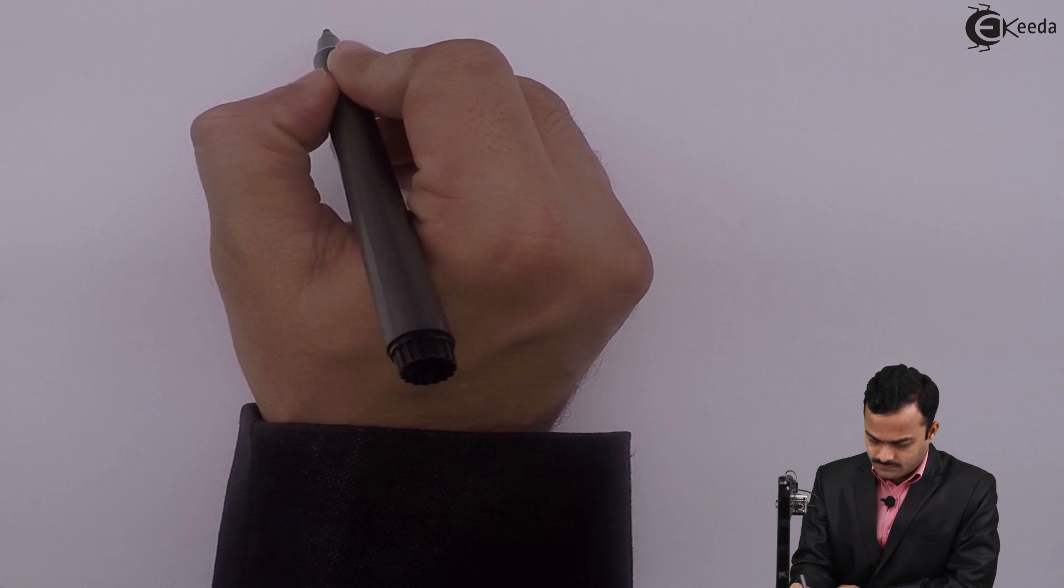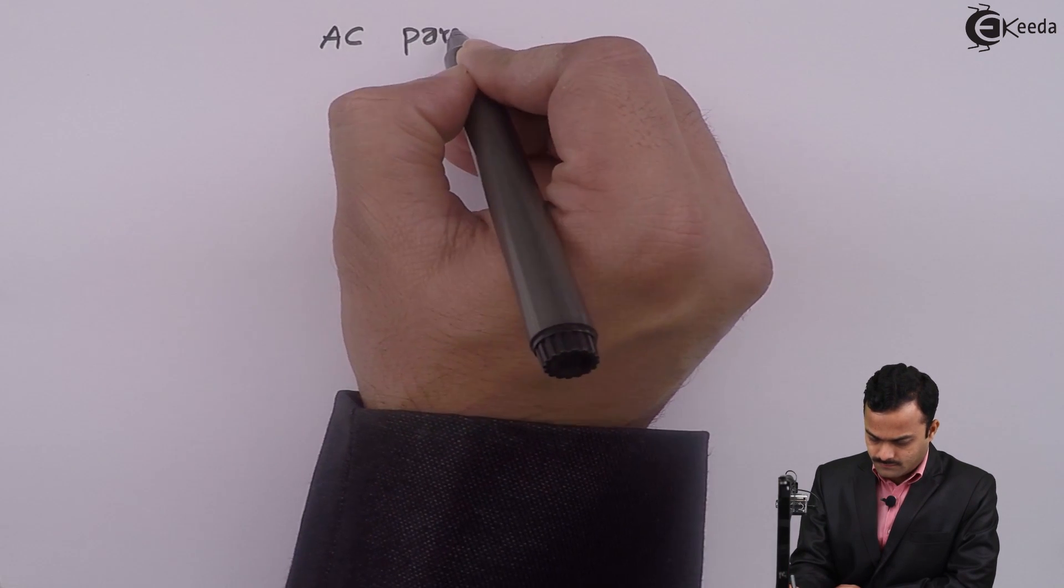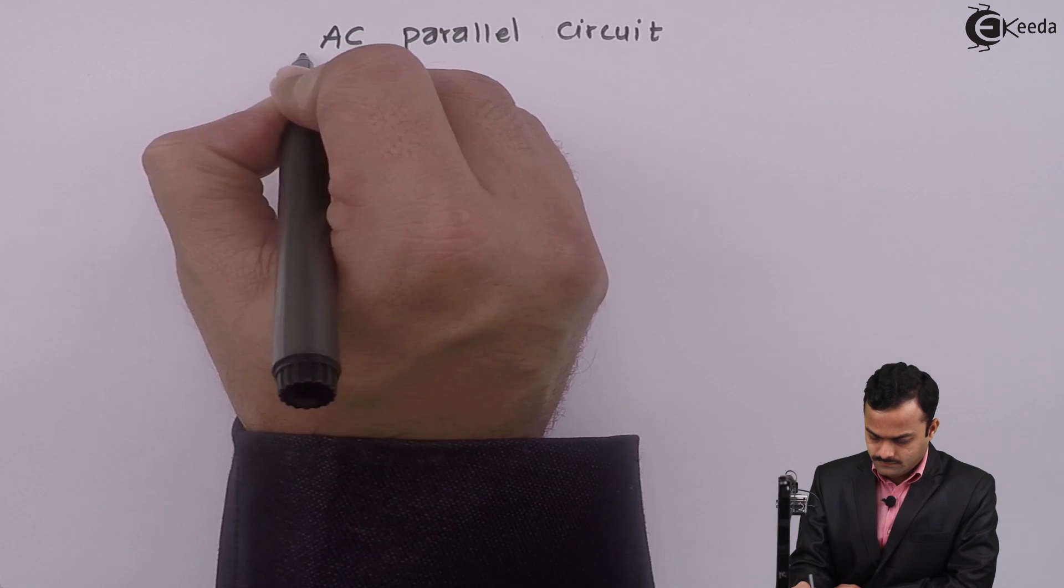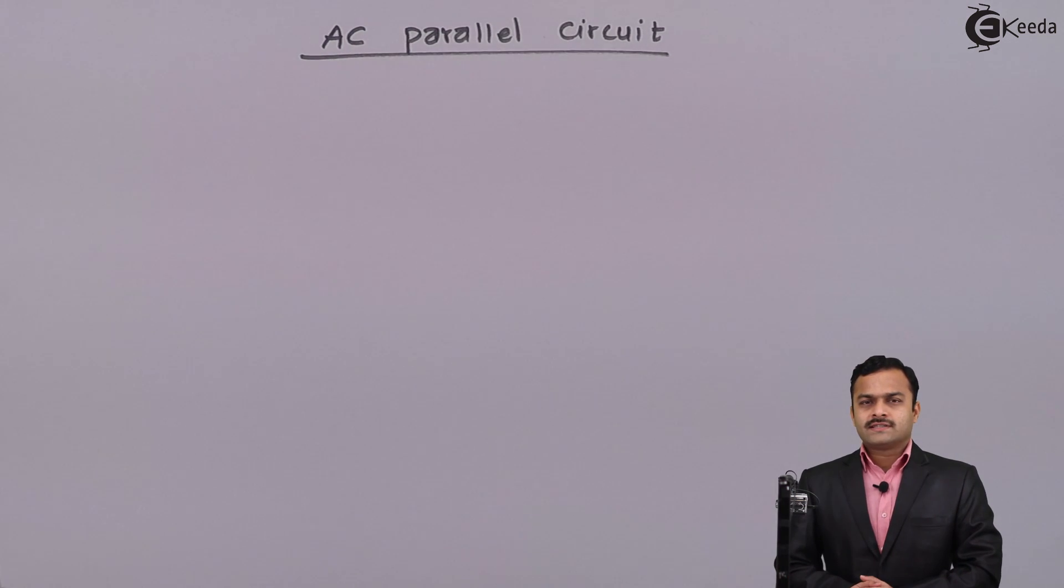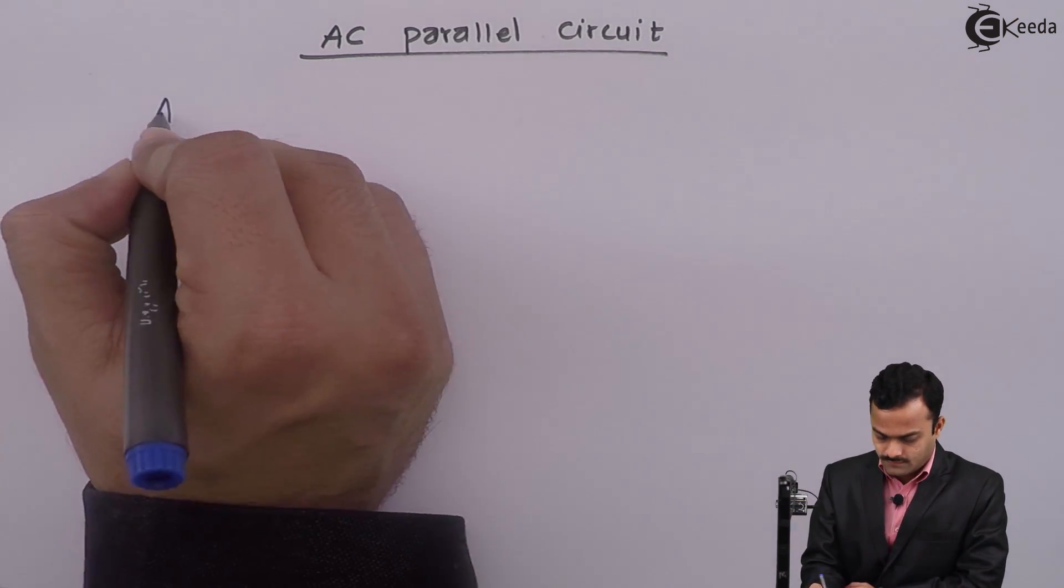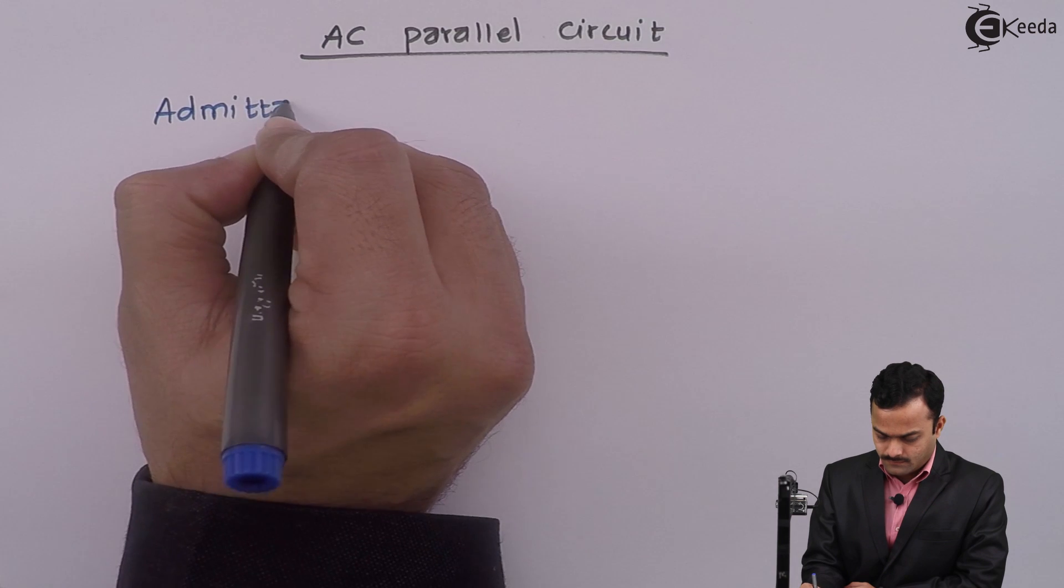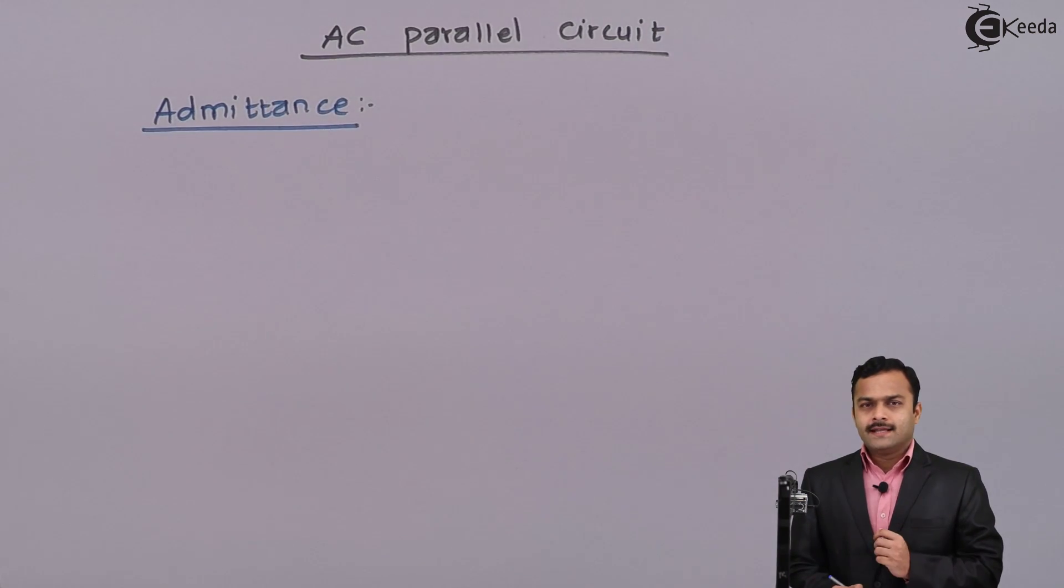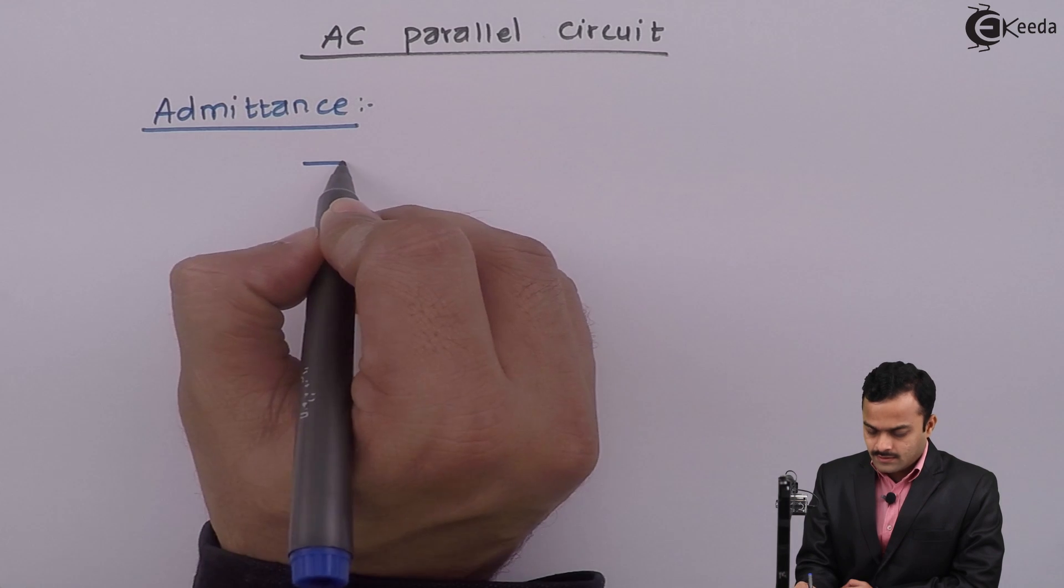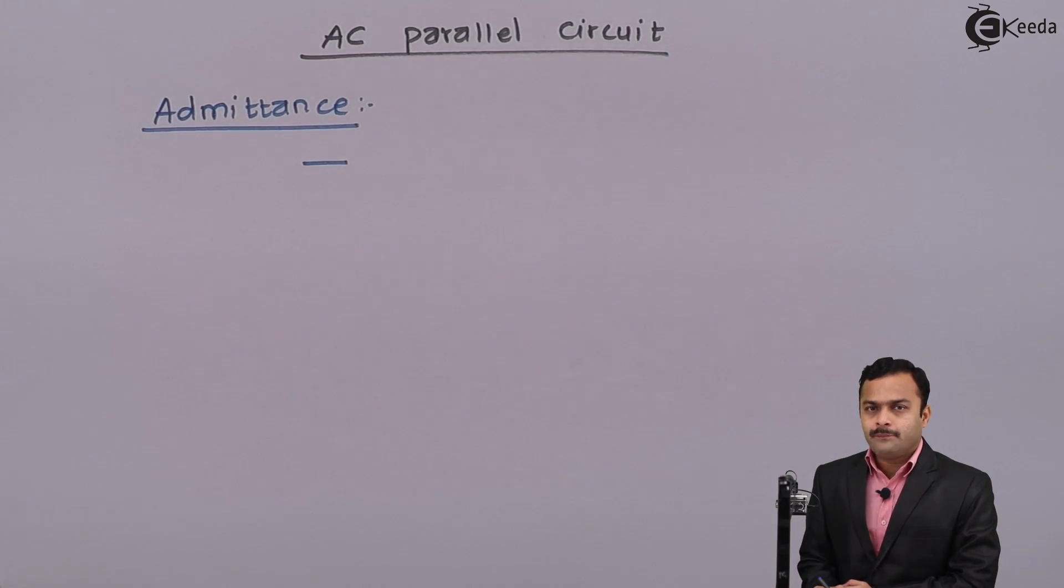Hello friends, in this video we are going to learn the behavior of AC parallel circuits. Before going to this module, let's consider a concept called admittance. Basically, admittance is the reciprocal of impedance.